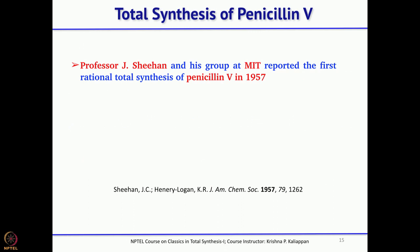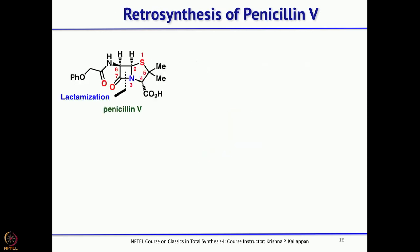Now that we have discussed several methods for making beta-lactams, we will move to how penicillin was discovered and how the first total synthesis was accomplished. Professor Sheehan from MIT and his group spent several years on the total synthesis of penicillin. Starting from around 1920, their sustained efforts finally led to the first total synthesis in 1957.